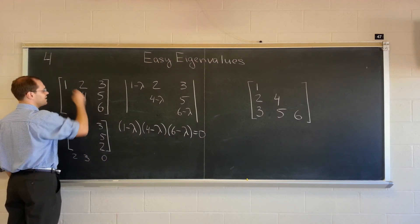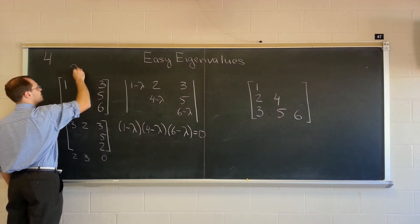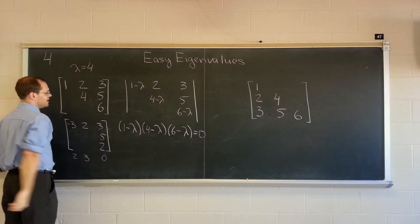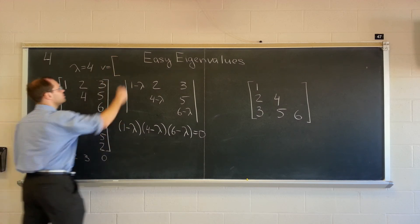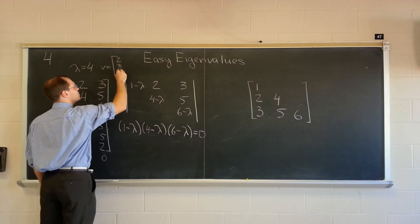So our eigenvalues are one, four, and six. And the one corresponding to the eigenvalue four is the eigenvector two, three, zero. So there you go.